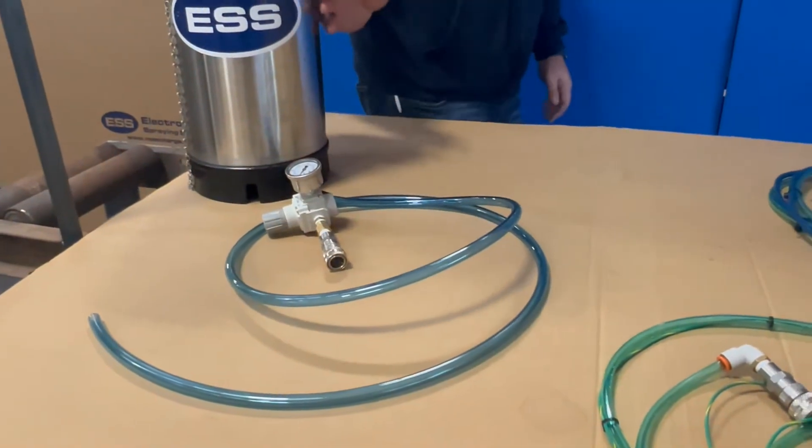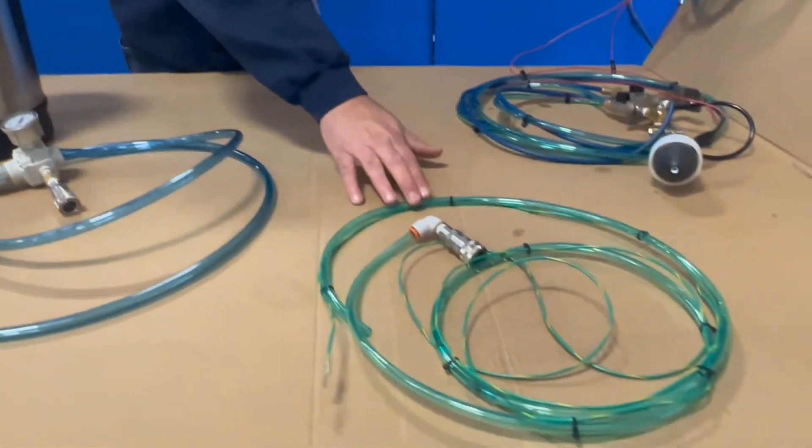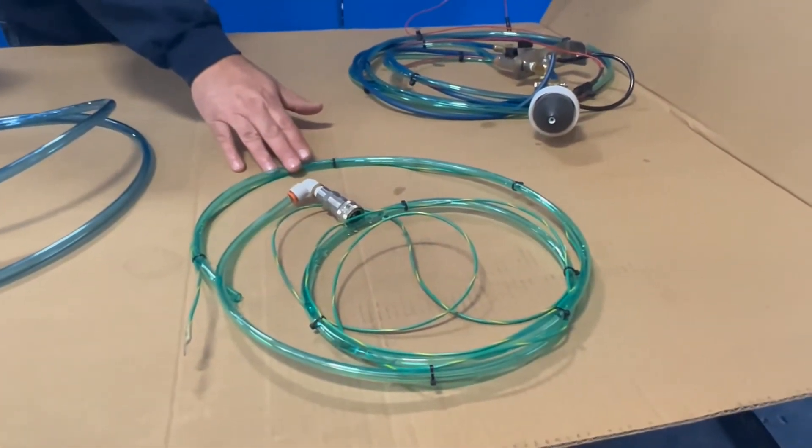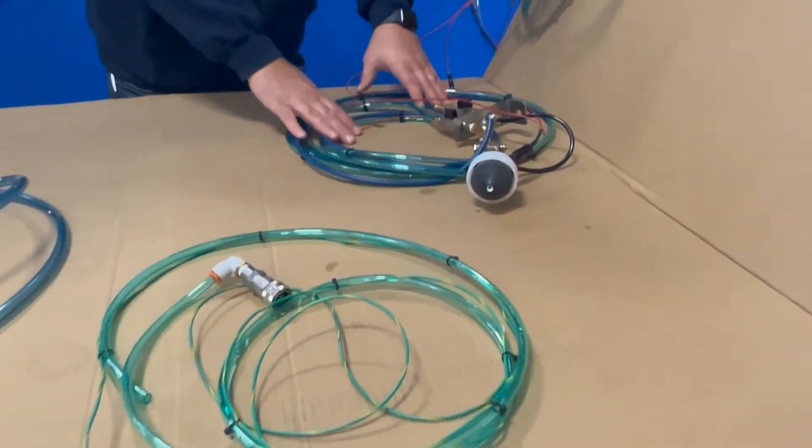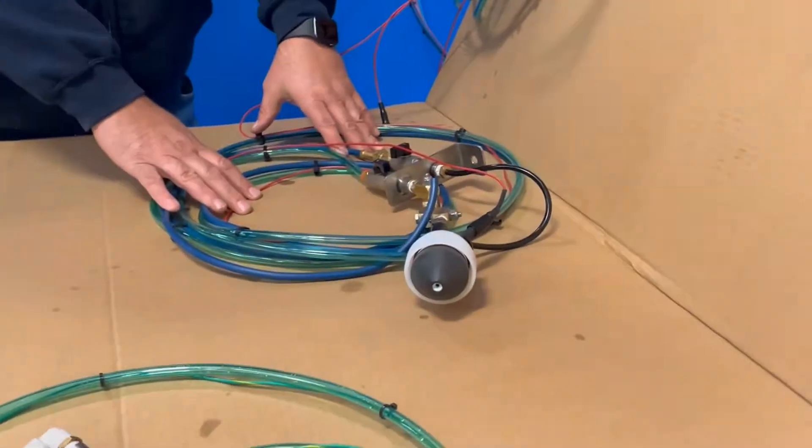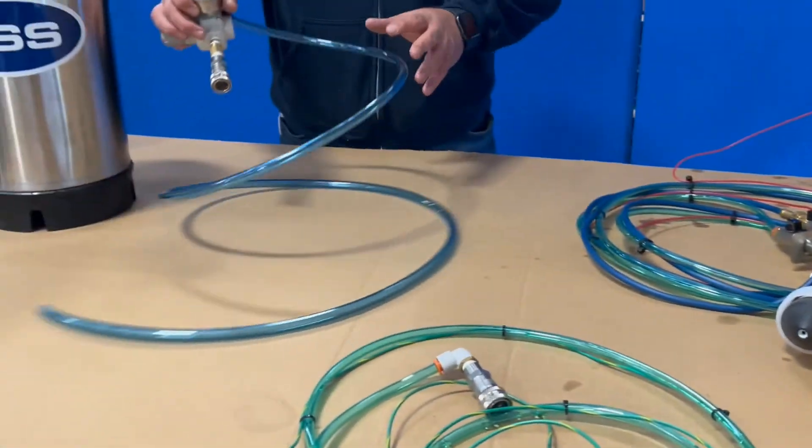This is the liquid hose that will come out of the tank and how we ground it, and then also a complete set of hoses for each nozzle. It's just a quick connect fitting.